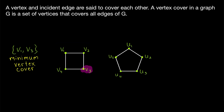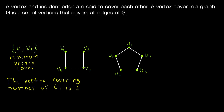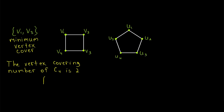Furthermore, now it is a minimum vertex cover. It's a minimum vertex cover because there's no other vertex cover of this graph with fewer vertices. There is another minimum vertex cover — instead of V1 and V3, we could use V2 and V4 to cover all the edges, but there's no vertex cover with fewer than two vertices. So this is a minimum vertex cover of C4. The number of vertices in a minimum vertex cover is called the vertex covering number of the graph.